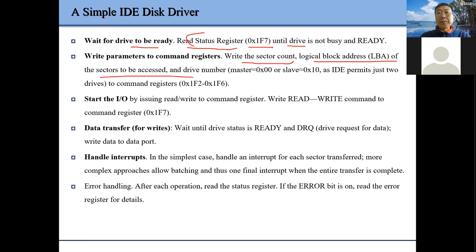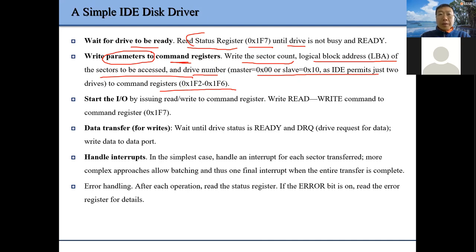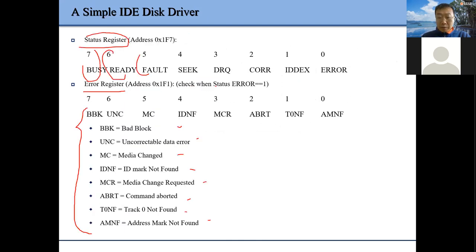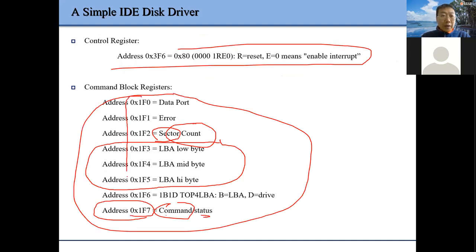Then we send the command — we need to set our parameters to our command register, specifying which device (master or slave), the address, and how many sectors. Then we set up the corresponding registers from 0x1F2 to 0x1F6 for sector address and so on.